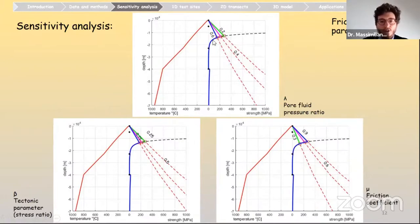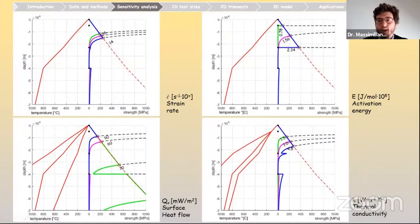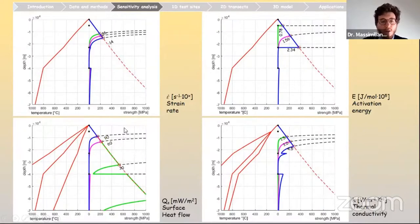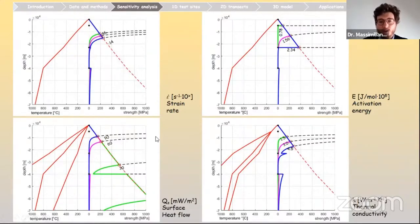If we consider the creep parameters, variations — including the thermal ones — cause changes in both BDT depth and BDT strength. The most influential parameters appear to be the thermal ones, especially surface heat flow and thermal conductivity.